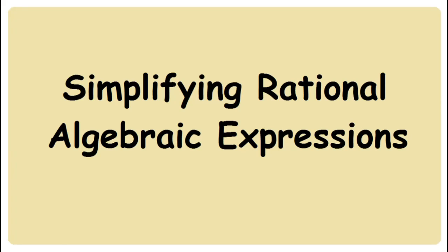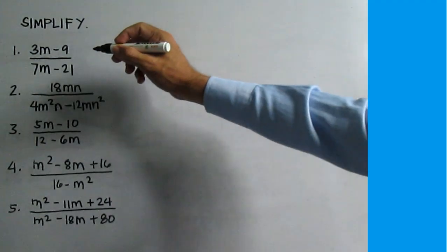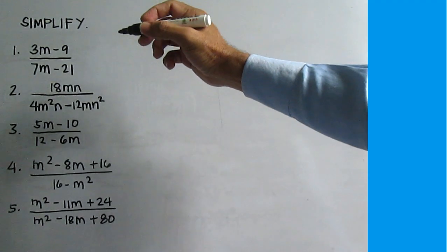Simplifying Rational Algebraic Expressions. To simplify means to reduce rational expressions to lowest terms by factoring the numerator and the denominator and dividing out the common factor. Number 1.